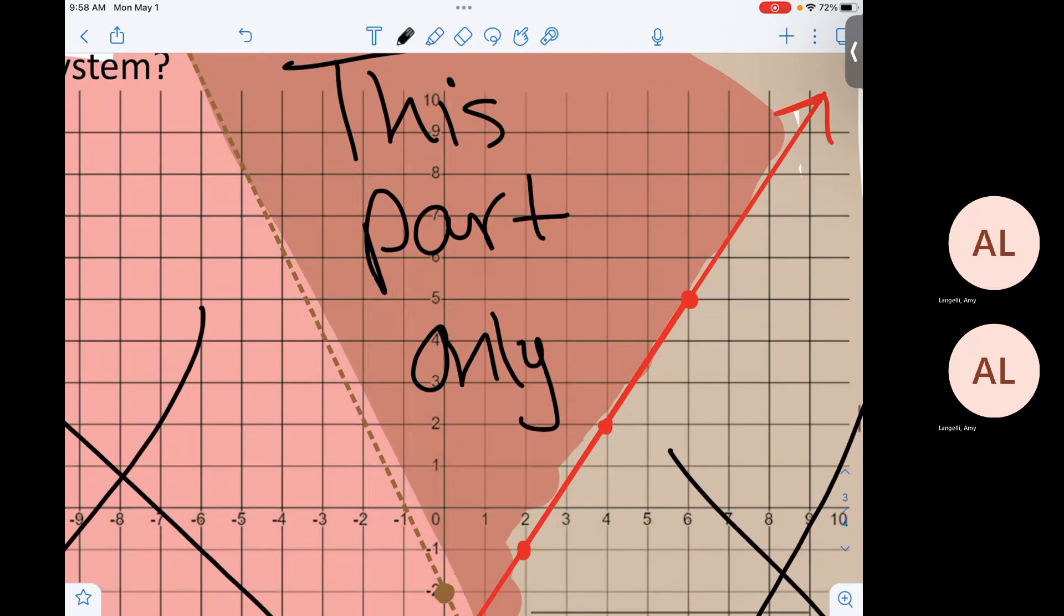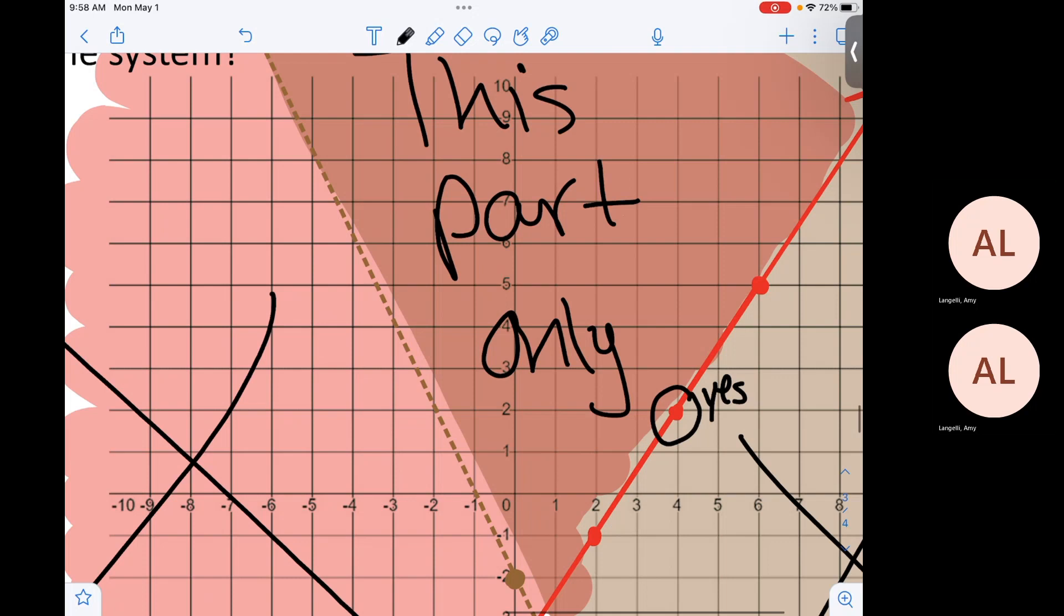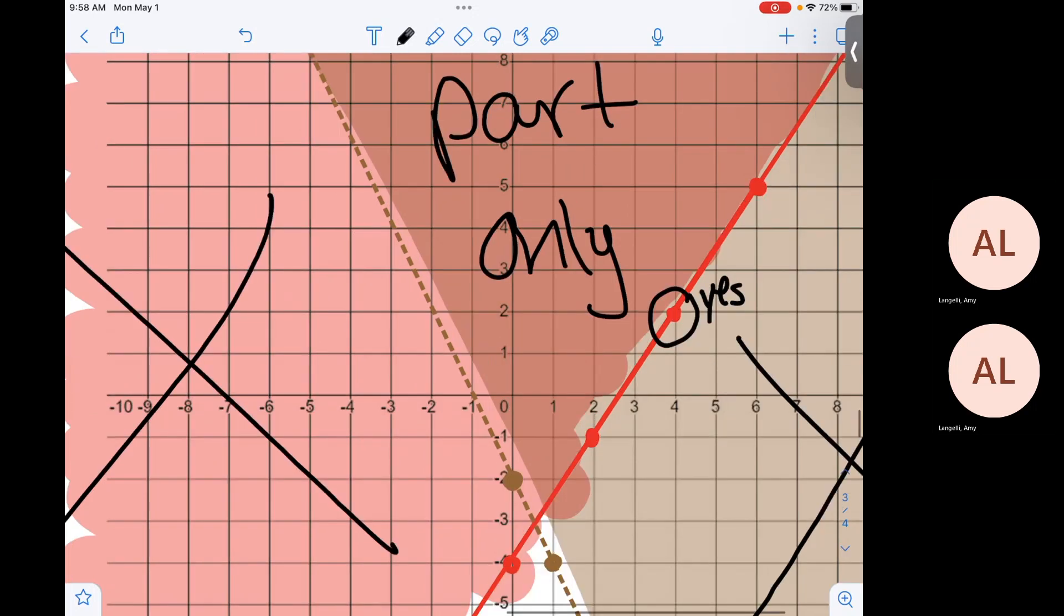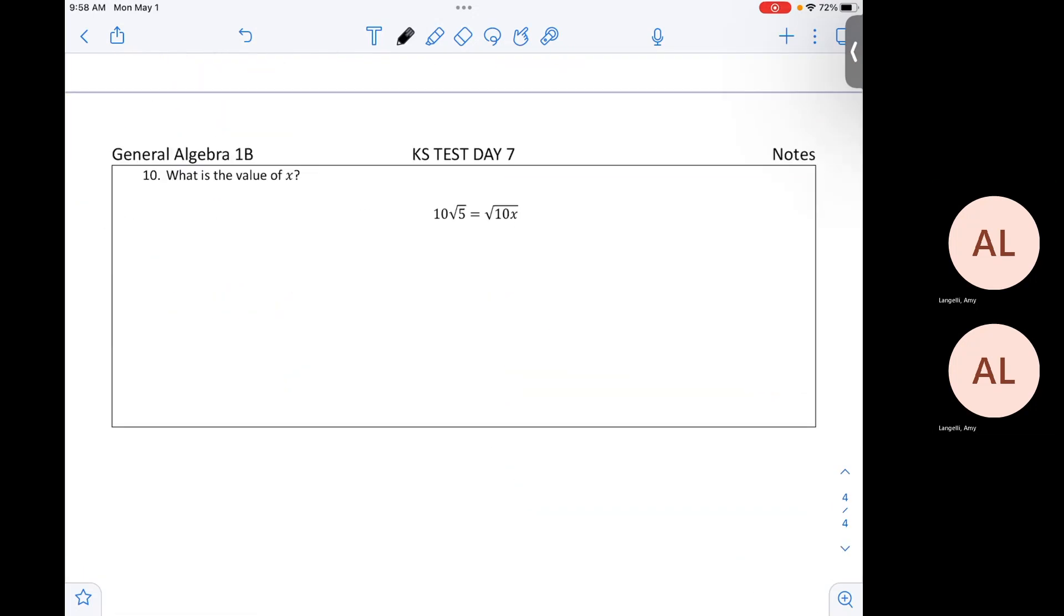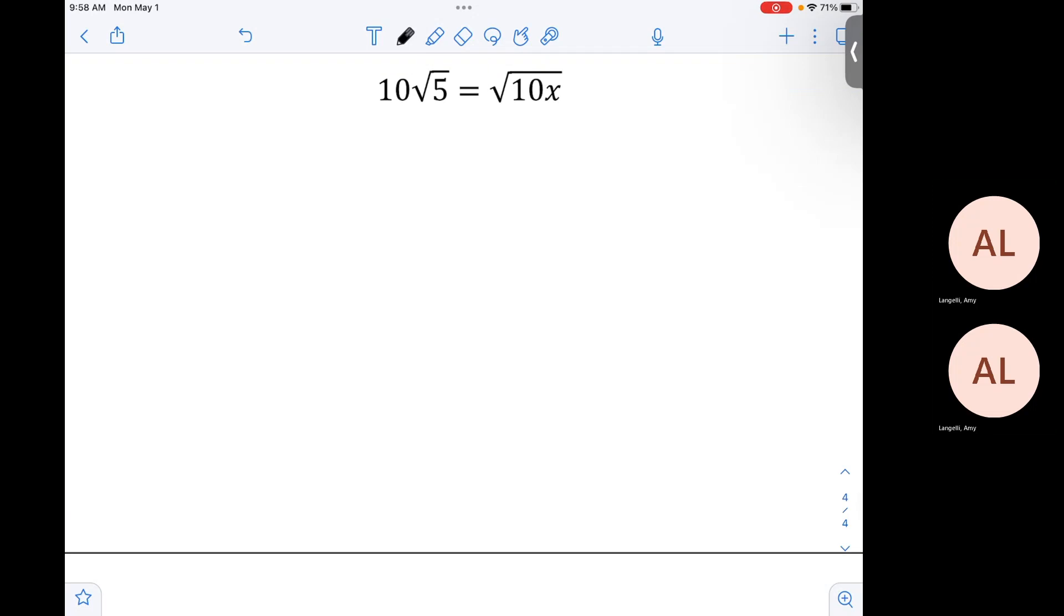Do you guys understand? They might not have this. It's just the double shaded. Is this a solution? Yes or no? Yep. What about this one? What about this? Is this one a solution? No, because they're on the broken line. Solid line, yes. Broken line, no. Oh, these ones did not go well on the quiz on Friday. So I think it would behoove us to talk about how to do this.